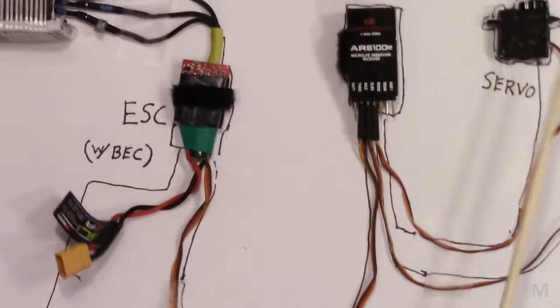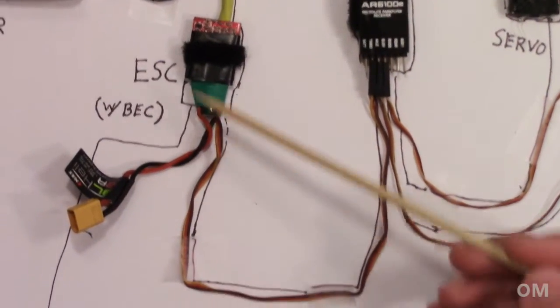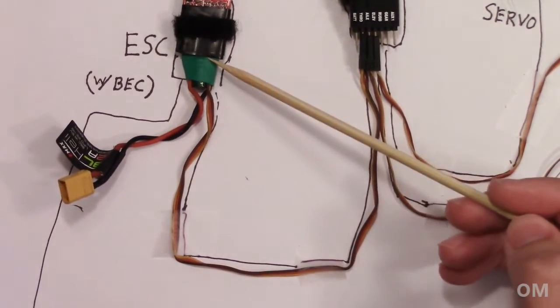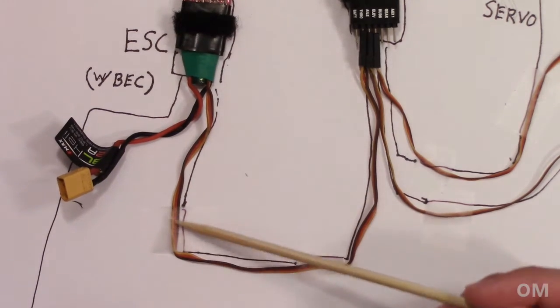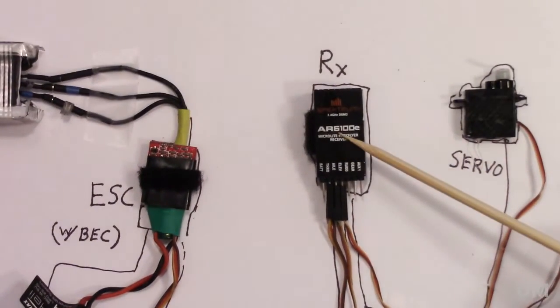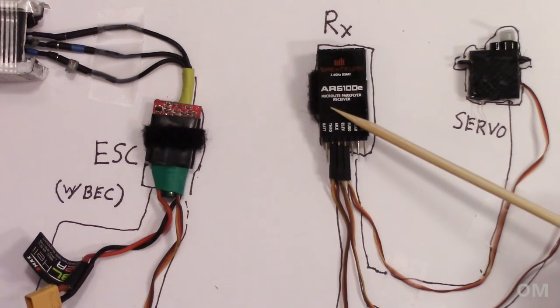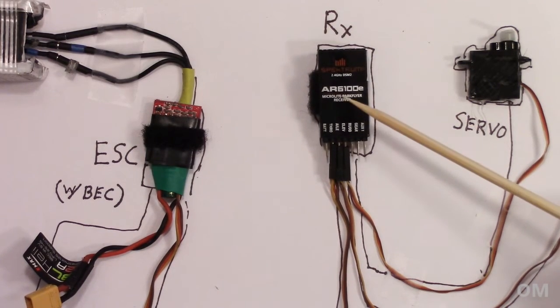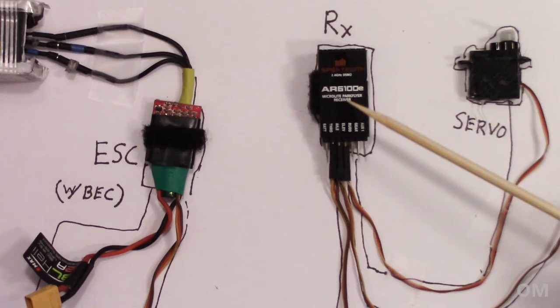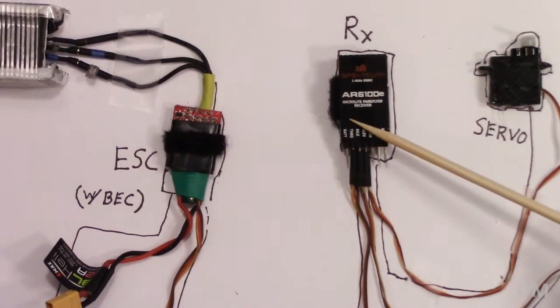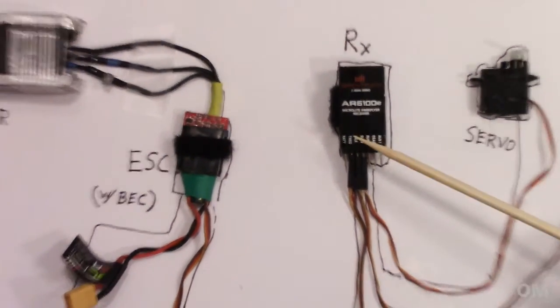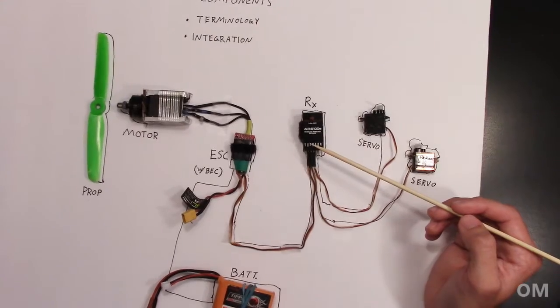What gets a little bit more complicated, but not too complicated, is running off of the ESC here is a cable and it goes to our receiver. Now the receiver, the receiver is pretty much kind of the most important part because the receiver is what receives our inputs from our transmitter. Let me zoom out here for a second and talk about the transmitter for just one second.